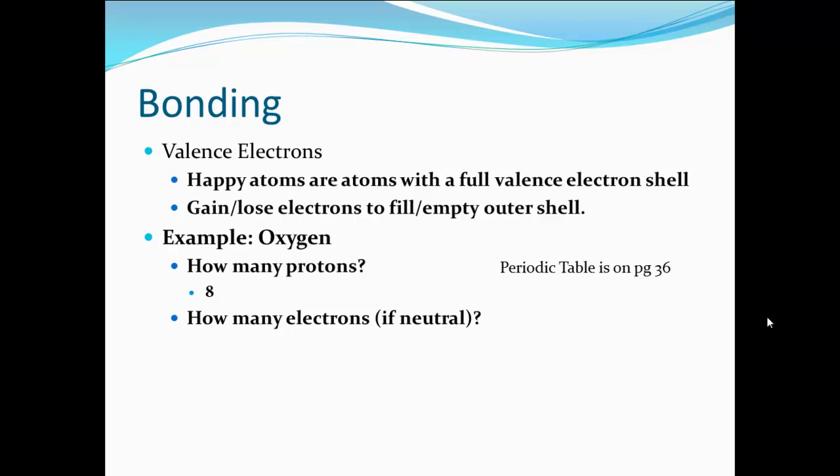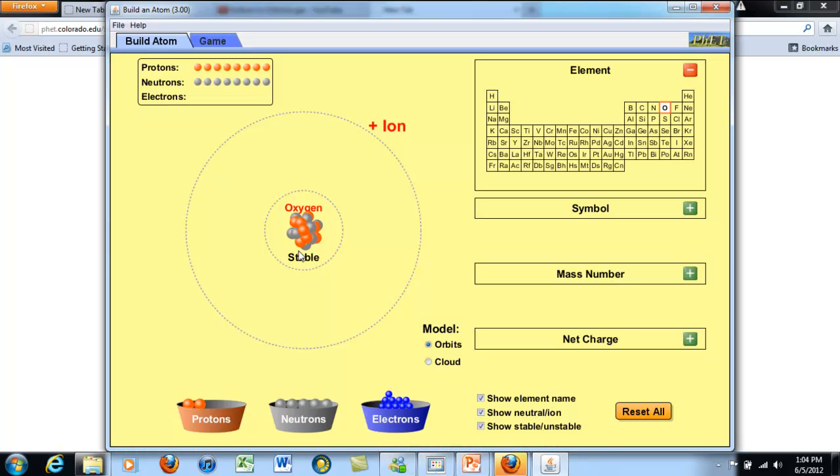Now, how many electrons would it have if it's neutral? If each proton is positive and each electron is negative, and they have the same absolute value, that means you'd have to have the same number of electrons to make it neutral, which means it has eight. Now, how many electrons are in that outer shell? Just because it has eight doesn't mean it only has one shell. If you think back, let's go to our simulation.